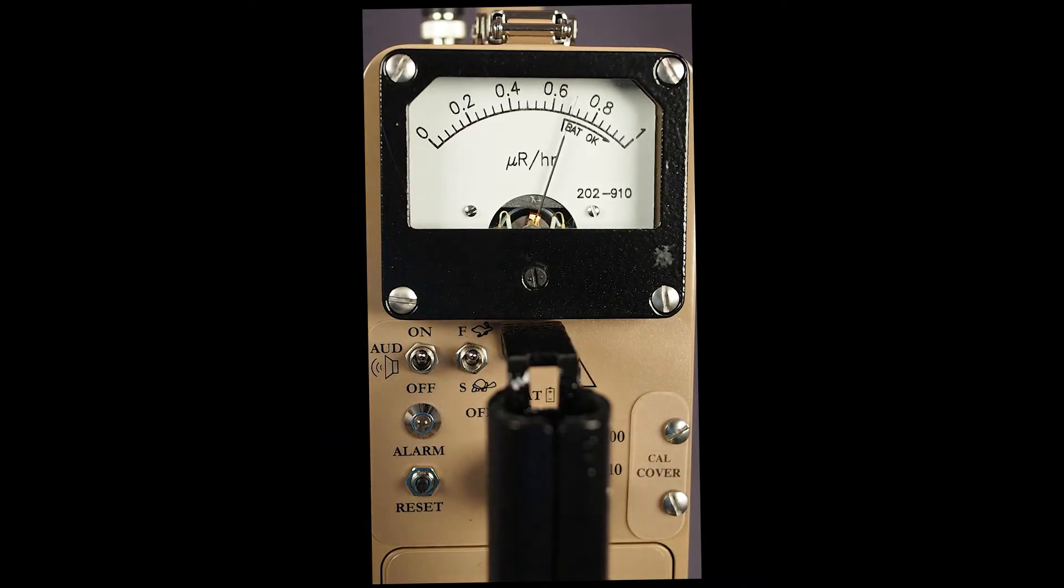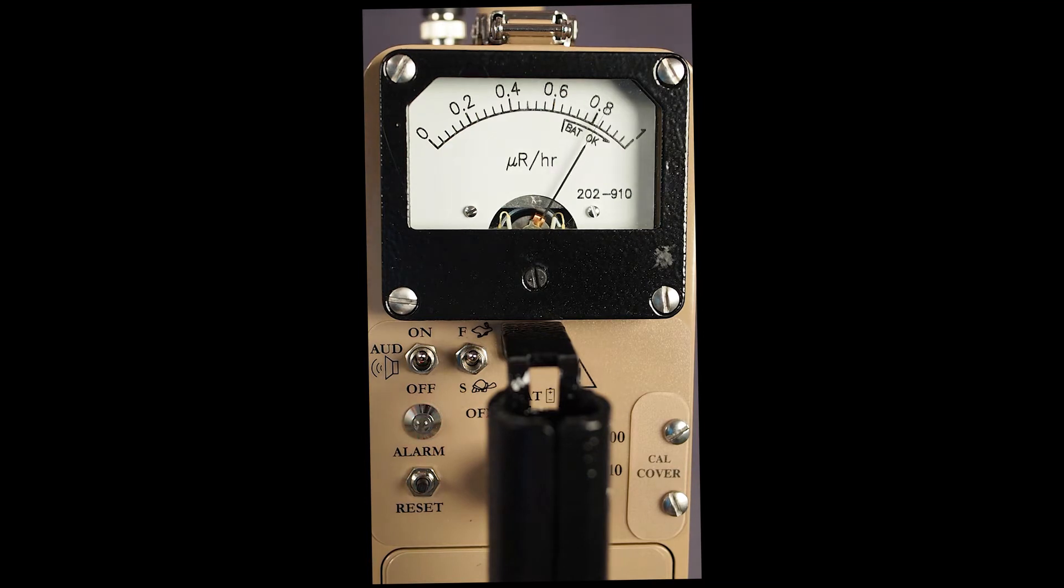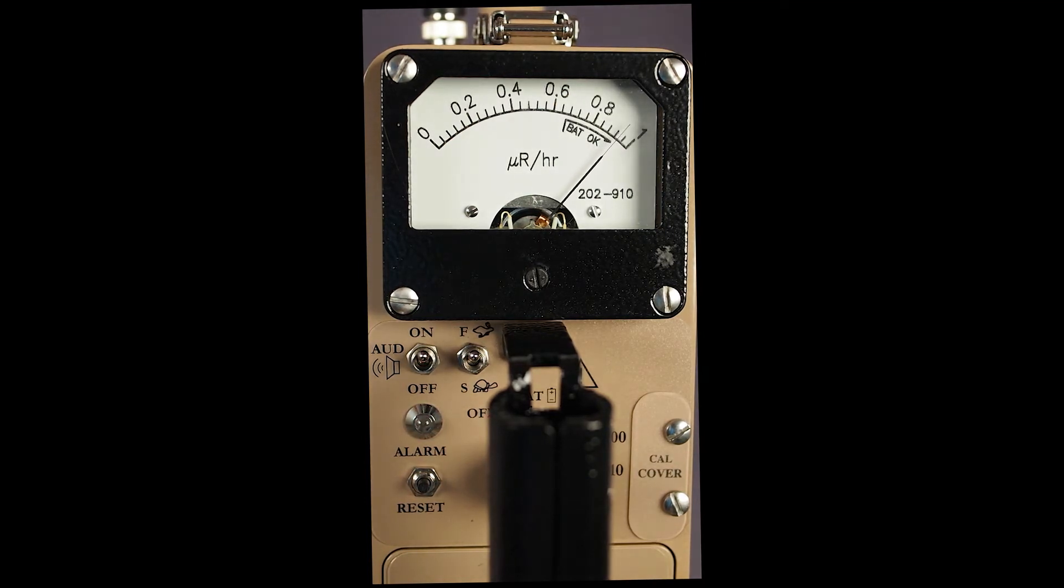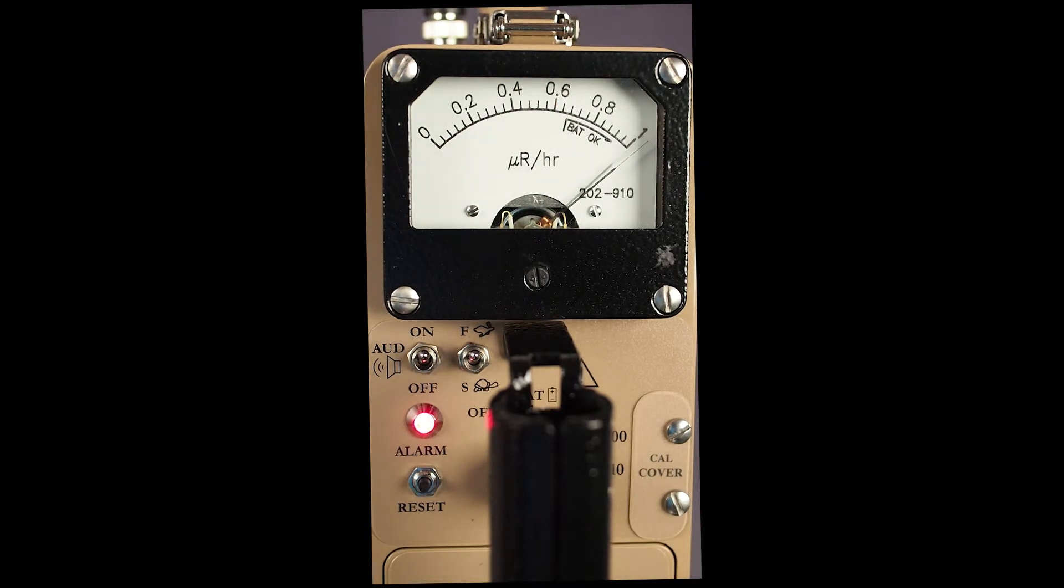The alarm light flashes when radiation levels rise above background. When the meter pointer deflects above the fixed alarm setpoint, this red lamp illuminates continuously. In both cases, the visual alarms will be accompanied by an audible alarm.